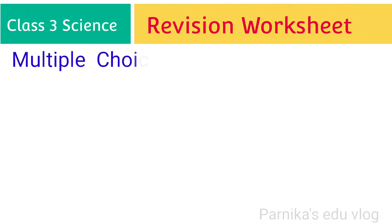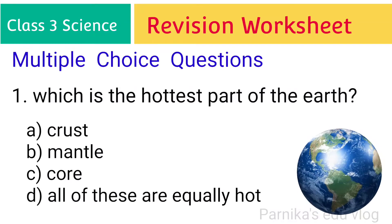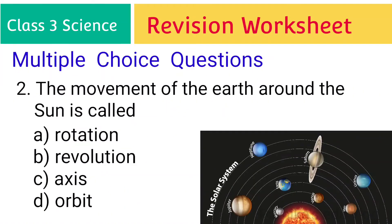Friends, first let's see multiple choice questions. First one: which is the hottest part of the earth? The answer is core. Second one: the movement of the earth around the sun is called? The answer is revolution.